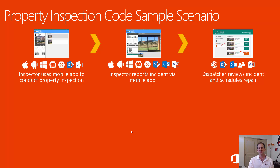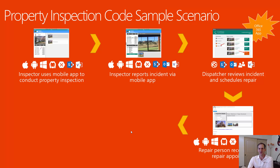The dispatcher will then review the incident and schedule the repair inside of the Office 365 web app, which they access through their web browser. The repair person will receive an incident repair appointment once the dispatcher has scheduled a repair. The repair person can then interact right in their email with an Office add-in for Exchange, which allows them to gather more details about this particular inspection, the incident that was found, and what they need to do in the repair.